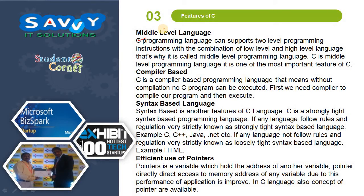Middle-level language: C programming language supports two-level programming instructions with a combination of low-level and high-level language features, which is why it is called a middle-level programming language. Compiler-based: C is a compiler-based programming language, meaning without compilation no C program can be executed — we must first compile our program and then execute it. Syntax-based language: C is a strongly typed, syntax-based programming language. If any language follows rules and regulations very strictly, it is known as a strongly typed, syntax-based language.